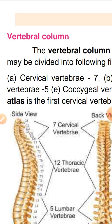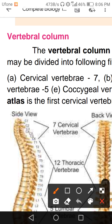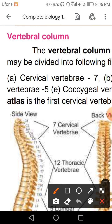These cervical vertebrae are very significant structures in your body. Some animals cannot look to the right or left side and have to move their entire body, because they have no cervical vertebrae. Your cervical vertebrae are 7 in number.